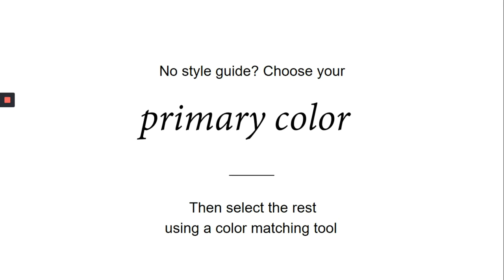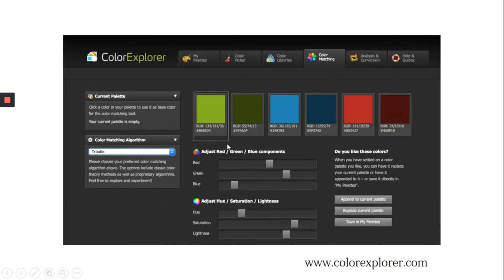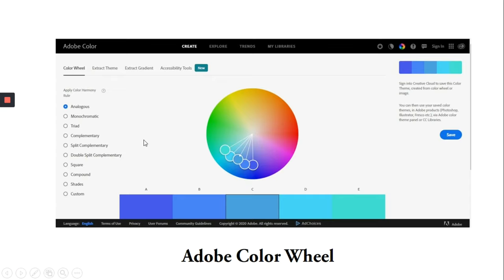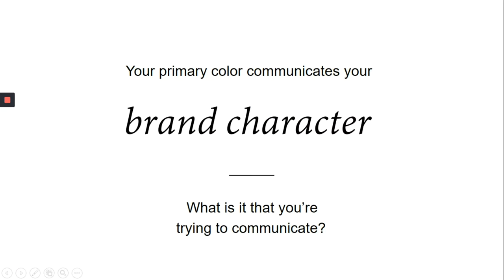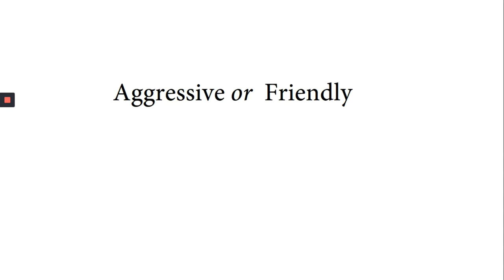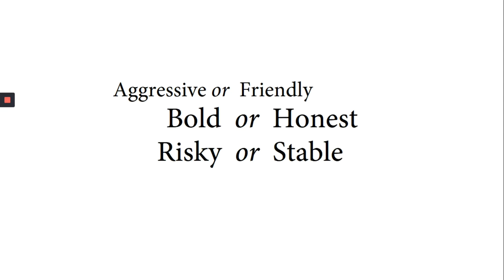In order to have a color palette, you first need to select a primary color, then use a color matching tool to make sure all your visuals look coordinated and consistent. You can use free tools like colorexplorer.com or Adobe Color Wheel for selecting colors that match your primary color. How do you choose a primary color? It is a color that should communicate your brand character. Ask yourself: what are you trying to communicate? Are you trying to come across as bold, aggressive, or friendly and honest? Are you trying to be risky or stable? Colors help communicate such things.